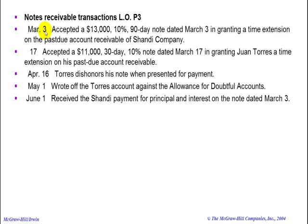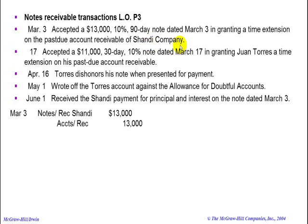On March 3rd, we accepted a $13,000, 10%, 90-day note dated March 3rd, granting a time extension on the past-due accounts receivable of Shandy Company. We will debit notes receivable — Shandy — and credit accounts receivable for $13,000, happening on March 3rd.